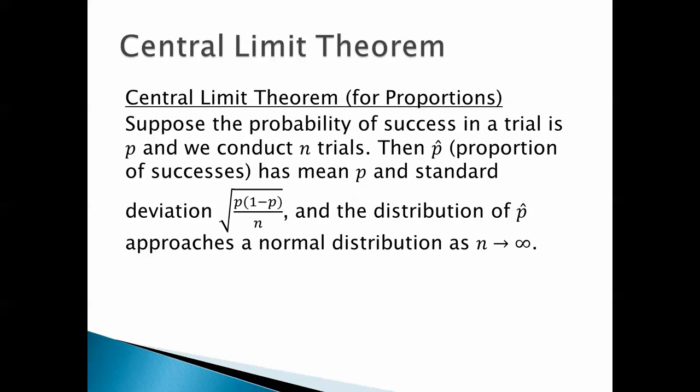One way of summarizing this is the central limit theorem — in this case, just for proportions. Suppose the probability of success in a trial is p, and we conduct n trials. Then p-hat, the proportion of successes, has mean p and standard deviation equal to the square root of p times one minus p over n. And the distribution of p-hat approaches a normal distribution as n approaches infinity.